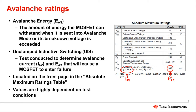That value is determined by the avalanche current, which is measured during an unclamped inductive switching test. So when people are talking about UIS current, they're talking about avalanche current. An unclamped inductive switching test is conducted to determine the current, and thereby the avalanche energy, that will cause the MOSFET to fail.